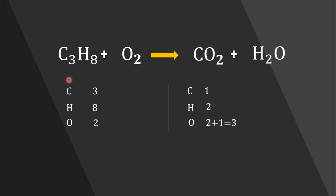Now we are going to balance our equation. Let's consider carbon first — in the reactant side we have three carbon atoms, but in the product side there is only one. So we can simply add coefficient three in front of carbon dioxide. Now carbon is balanced. Next, consider hydrogen — in the reactant side there are eight hydrogen atoms, and in the product side there are two. So we add coefficient four in front of H₂O. Now hydrogen is also balanced.